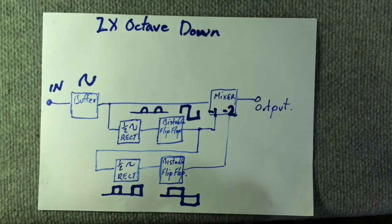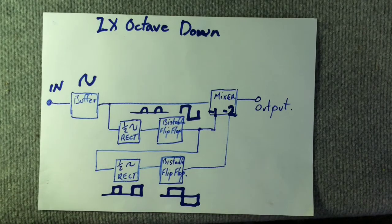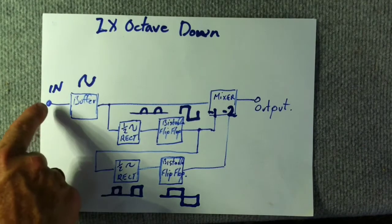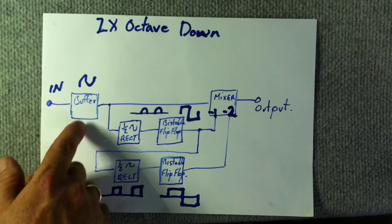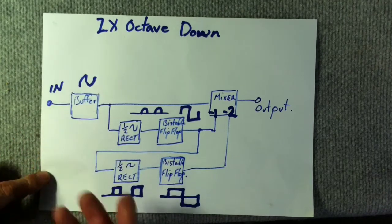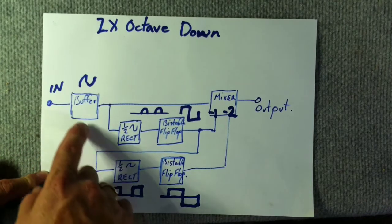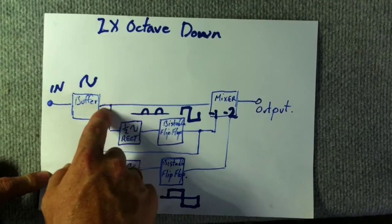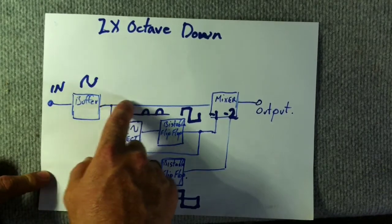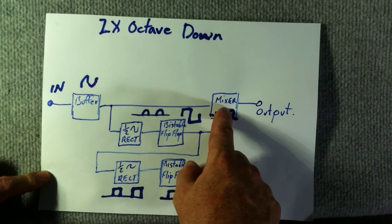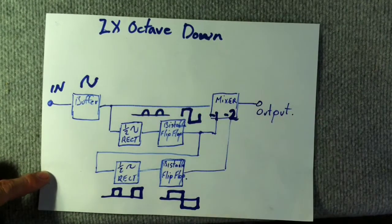So let's get to this block diagram because that's all I have to go off so far. We have our input and we feed it through a buffer like a 741. We're going to split the signal into two. And one will go straight to our mixer section at the end and to the output.